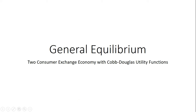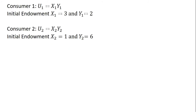We're going to do some general equilibrium analysis for a consumer exchange economy where consumers have Cobb-Douglas utility functions. Consumer 1's utility equals x times y, with an initial endowment of three units of good x and two units of good y. Consumer 2 has the same utility function but a different endowment: one unit of x and six units of good y. We want to find, in equilibrium, how many units of good x and good y each consumer consumes.